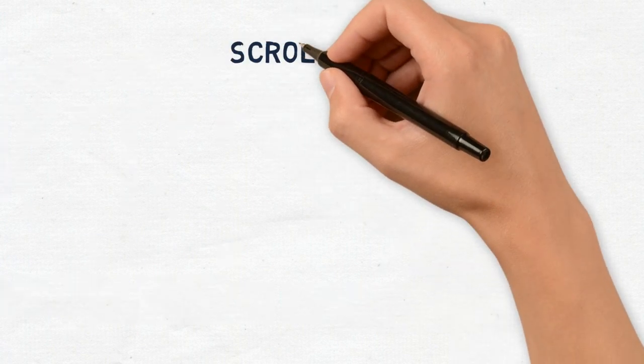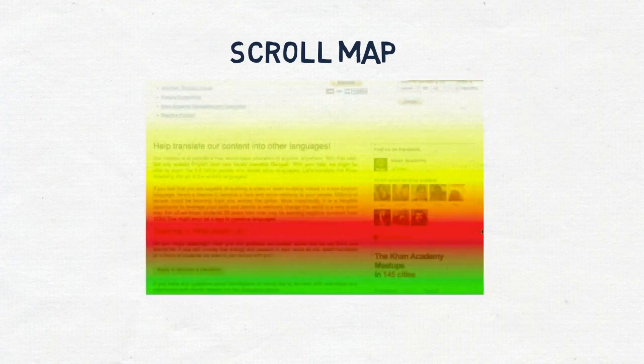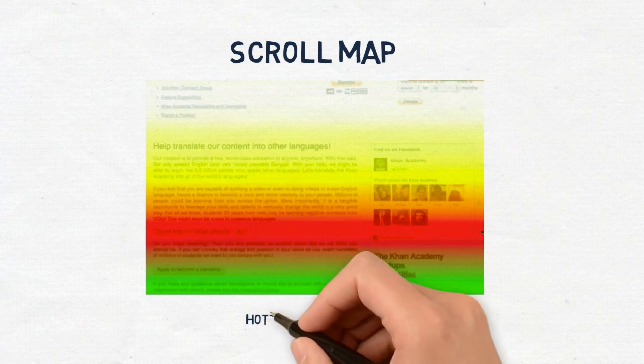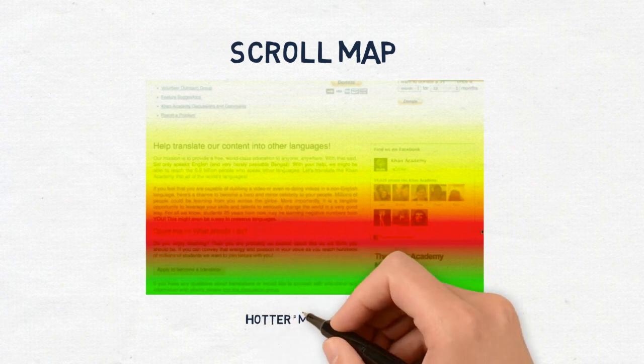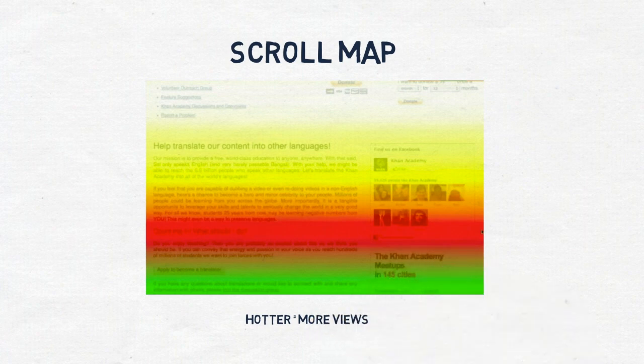Let's walk through the types of heatmaps. Scroll maps show you the scroll patterns. They can tell you how much information is available on your page without scrolling, how far people scroll before leaving the page, and which sections users spend the most time on. The hotter the section, the more users have viewed it. This data can help determine where you should place call to actions or important information.